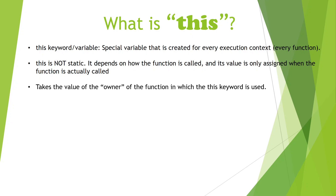The first thumb rule to keep in mind: the 'this' keyword takes the value of the owner function — that means whosoever is calling that function, inside which we have used the 'this' keyword, that 'this' value will be associated by that owner. This is the most important golden rule. We'll discuss five to three scenarios and the usage of 'this' that can come in front of us when we are doing code in live production.